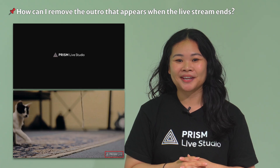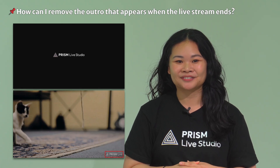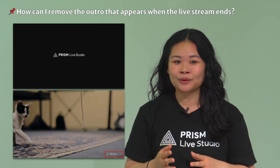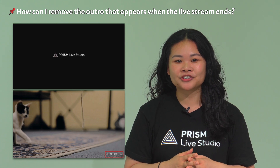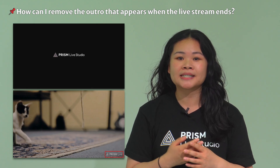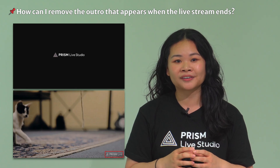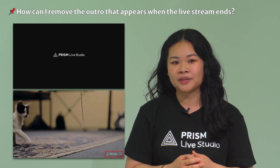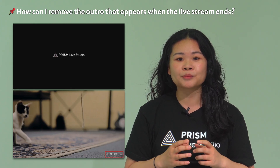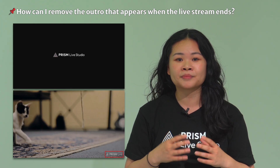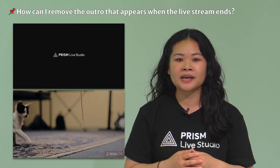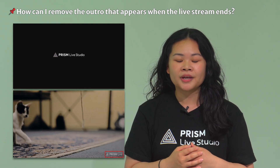This is a question we've been hearing a lot from our users. First, let's get one thing straight: the difference between a watermark and an outro. In the Prism application, there is both a watermark and an outro. The watermark is the app's logo that appears in the lower right corner of the screen during a live stream. It appears for about 10 seconds per minute by default, but you can remove it from the app's settings menu. The outro, on the other hand, is the black background scene that appears at the end of the live stream.